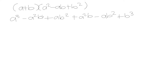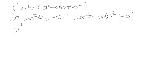We can simplify this because we have a negative a squared b and a positive a squared b, so those will cancel each other out. We have a positive ab squared and a negative ab squared, so those are going to cancel each other out as well.